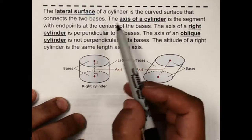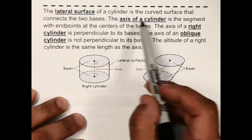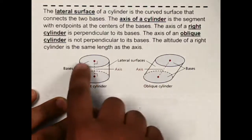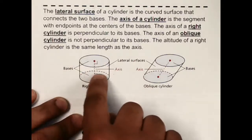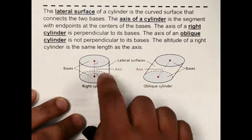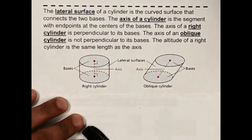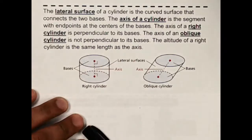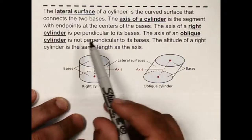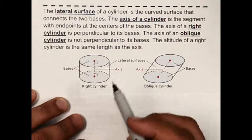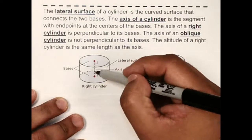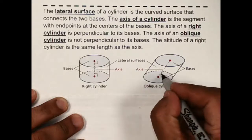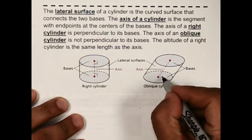Now we're going to introduce the lateral surface area of a cylinder, which is the curved surface that connects the two bases — just this rounded piece, like the label part of a can. The axis of a cylinder is a segment with endpoints at the center of each base. The axis of an oblique cylinder is not perpendicular, so this angle is not 90 degrees.